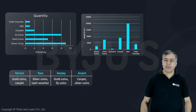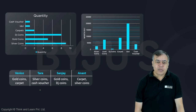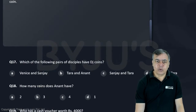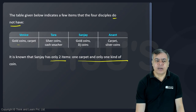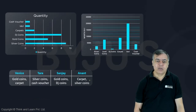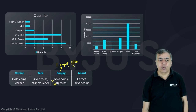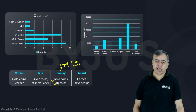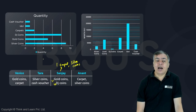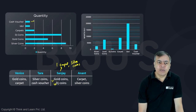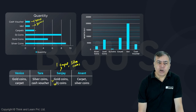I have taken all the data together. Sanjay has only two items: one carpet and only one kind of coin. Since Sanjay cannot have gold coin and DJ coin, he must have silver coins. Now, total worth: one cash voucher is 4,000, one idol is 20,000, two carpets at 9,000 each = 18,000, and DJ coins: 500 into 8 = 4,000.